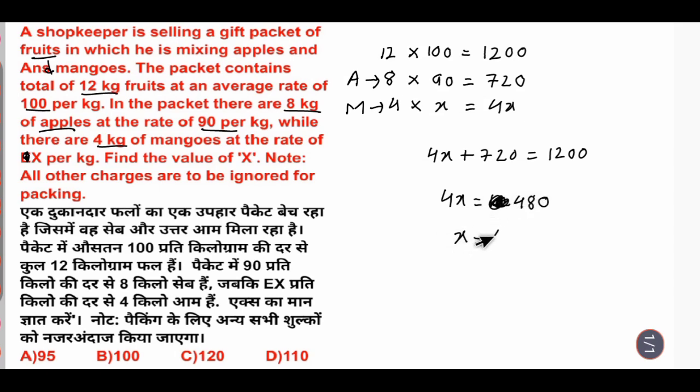Or X equals to mera kitna aajayega? 480 by 4. So 4, 1, 0, 4, 4, 1, 0, 4, 4, 2, 0, 8, 0. Yaani ki jo X ka value hai, wo kitna hai? 120. Jo mango ko sale kiya, 120 karke sale kiya. Jo ki option number mera C ho jayega. Thank you.